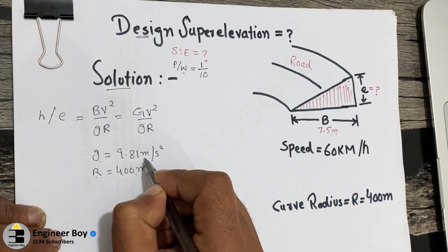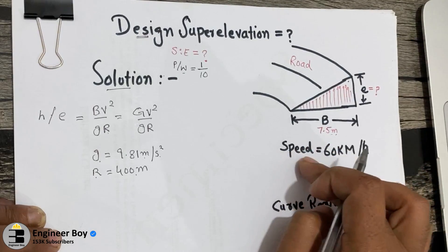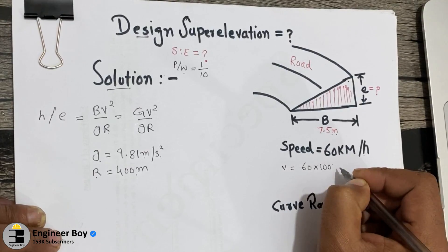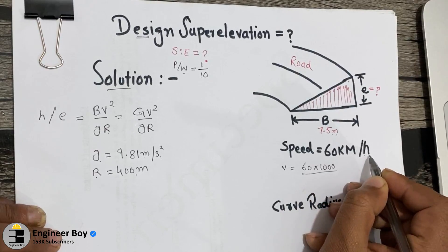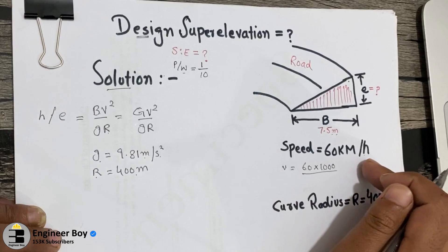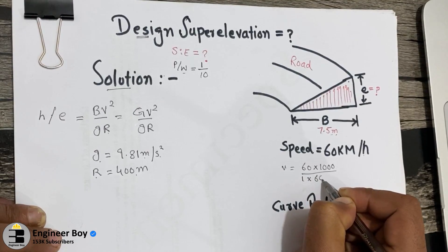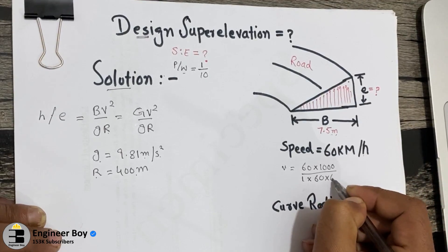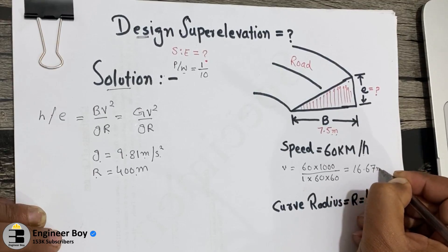Since R is in meters and g is in meters per second squared, the speed V needs to be converted into meters per second. So V equals 60 kilometers multiplied by 1000 to convert to meters, divided by 1 hour converted to seconds by multiplying by 60 times 60. That gives us 16.67 meters per second.